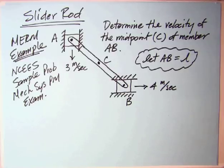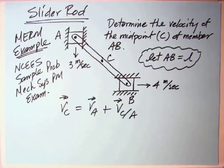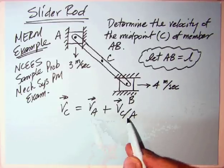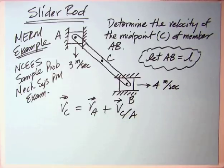The first thing to do is to write down an equation relating the various points. Since we need the velocity of C, that would make sense. The velocity of C is the velocity of A, which we know about, all about its magnitude and direction, plus the velocity of C relative to A, as if A is fixed.